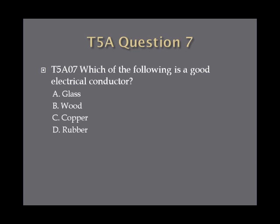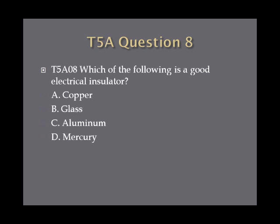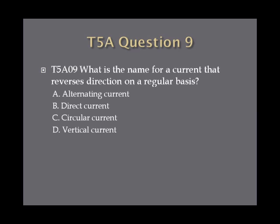Question 7: Which of the following is a good electrical conductor? A, glass; B, wood; C, copper; or D, rubber. Question 8: Which of the following is a good electrical insulator? A, copper; B, glass; C, aluminum; or D, mercury. Question 9: What is the name for a current that reverses direction on a regular basis? A, alternating current; B, direct current; C, circular current; or D, vertical current.